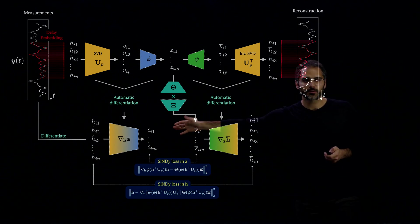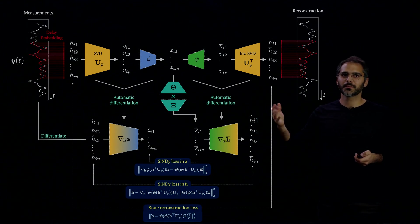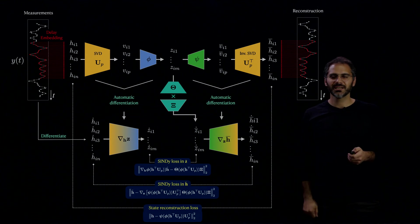We also want to minimize the difference between h-dot and h-bar-dot, as well as the reconstruction loss between h-bar and h. Now, there is one last loss we can also add to constrain our model even further.